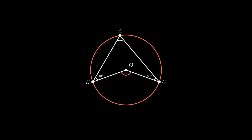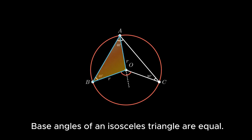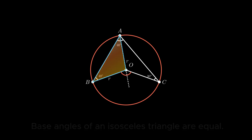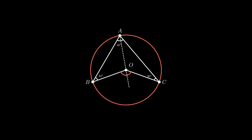In order to do so, we need to construct a line from point A such that it passes through point O, resulting in the formation of triangle AOB. This triangle AOB is an isosceles triangle as side AO and side BO are radii of the circle. Since base angles of an isosceles triangle are equal, therefore we conclude angle BAO is also 40 degrees.